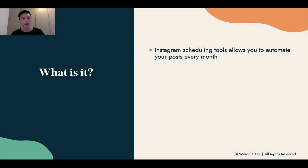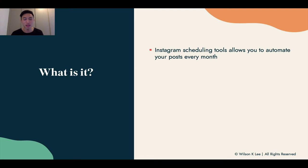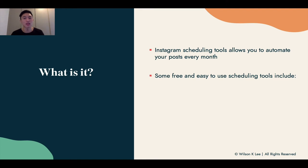What is automation? There are a lot of softwares out there that you can use to help you automate your posts every month. That way, you don't need to be on your phone every single day worrying about what to post, figuring out the hashtag groups, figuring out your captions every single day. That's the reason why you want to automate this — so you can set it up and forget about it for the whole month.